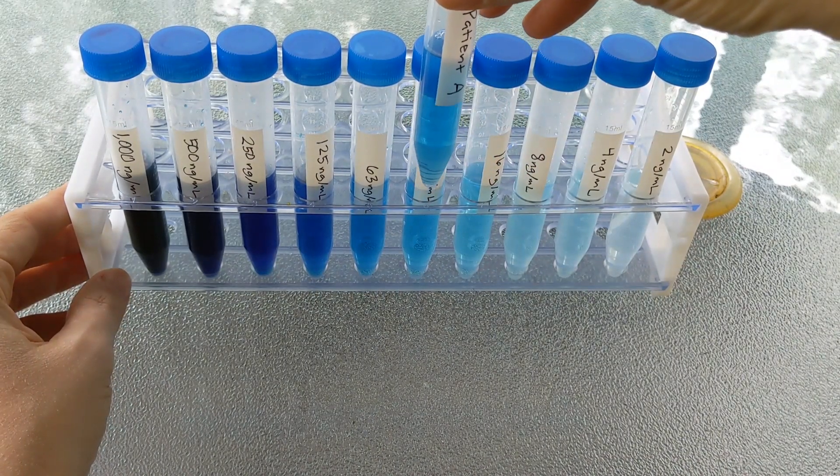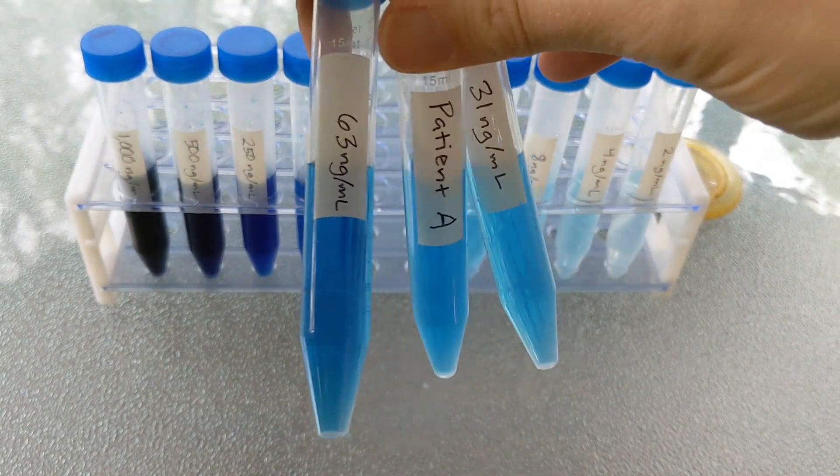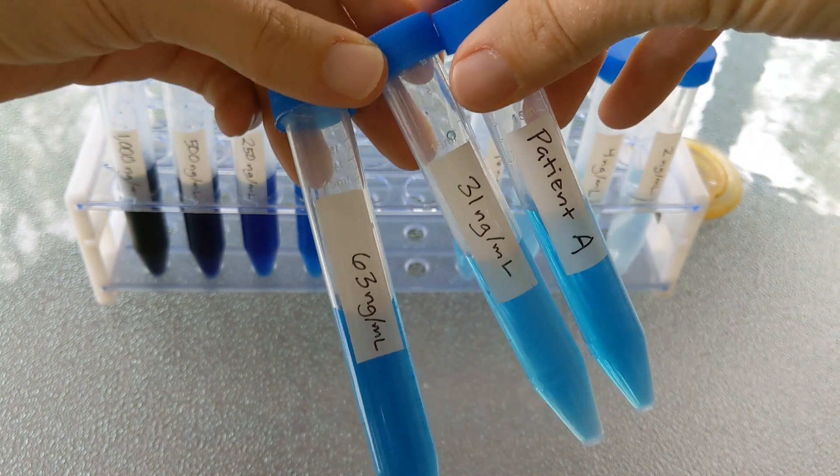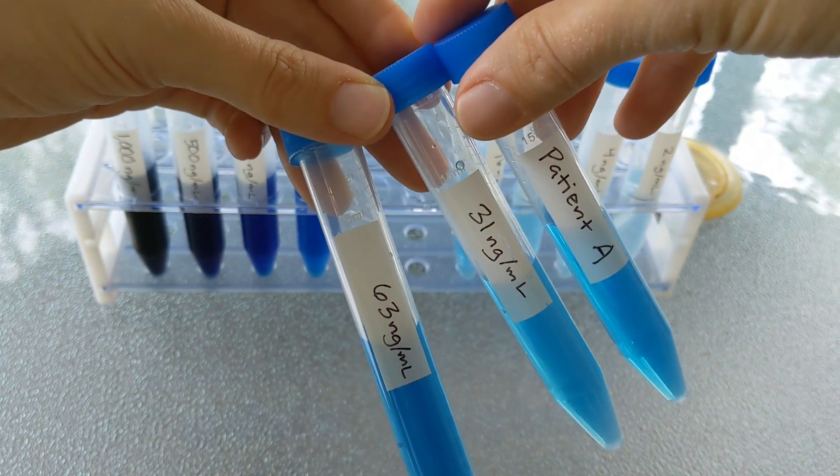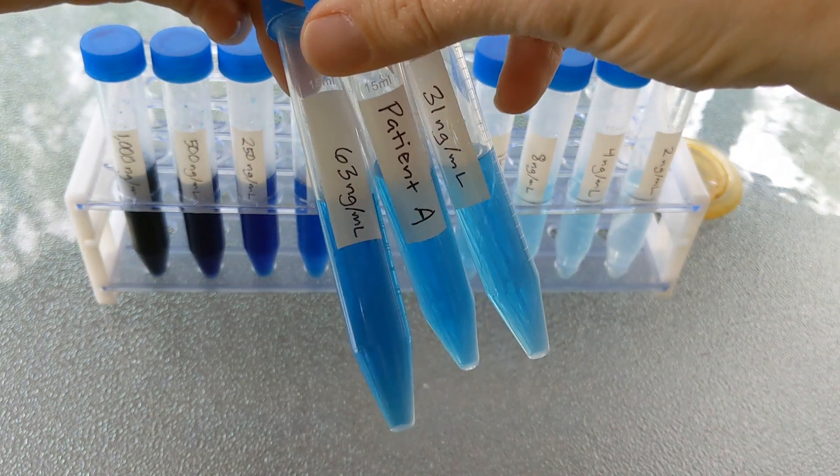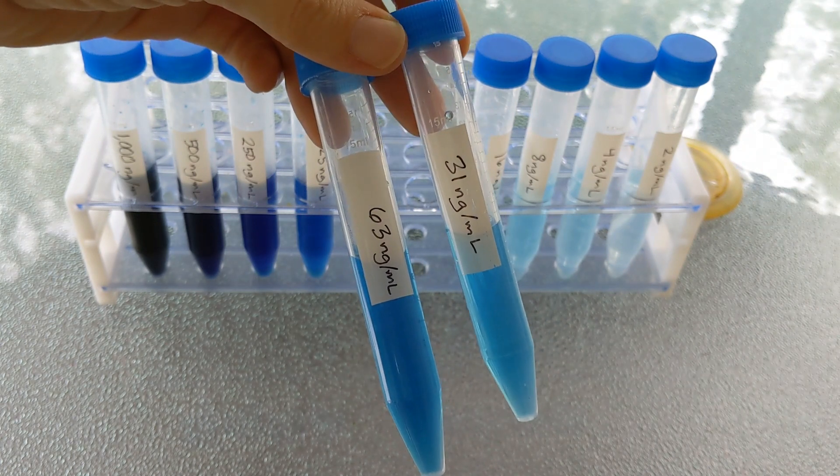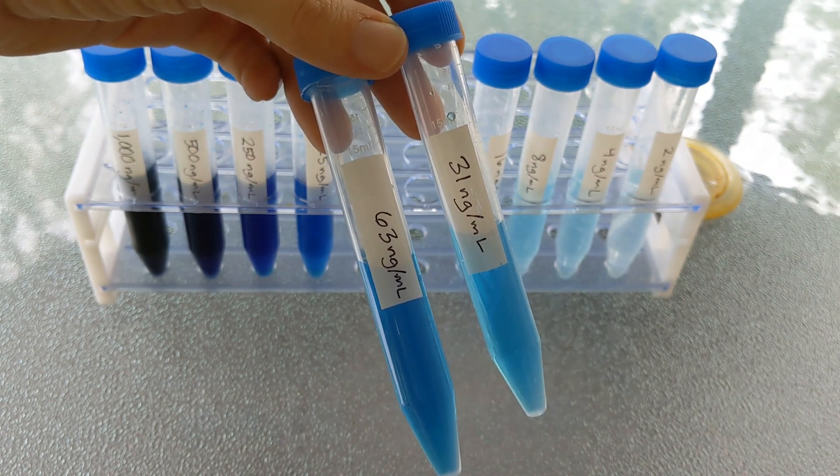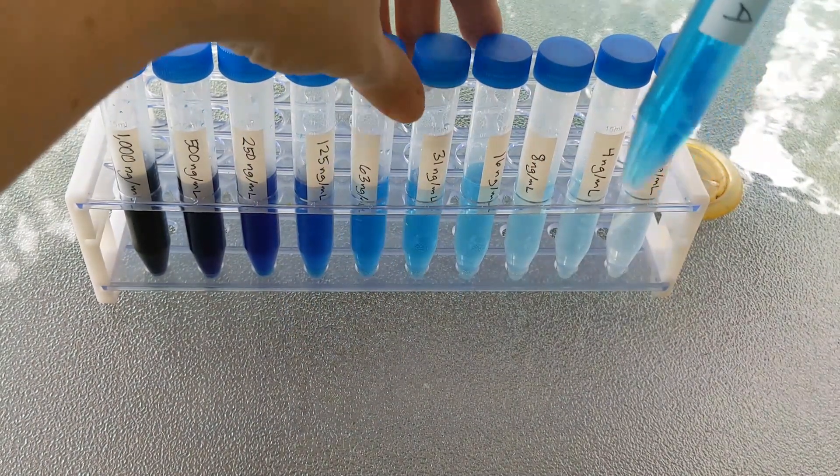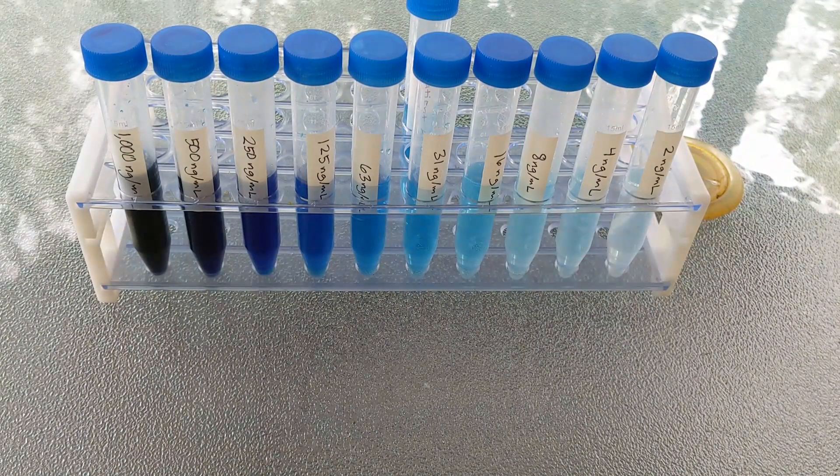And it can be kind of tricky, but I'd say it's maybe between these two. To me, that one looks a little bit more like this. So I'm going to call patient A 31 nanograms per milliliter. If you thought it was right between the two, you could even estimate in between. So you could average 31 and 63. It's going to be somewhere around 46 would be my guess. So that's the first patient. I'm going to line it up right here behind 31 because that's what I think it matches.